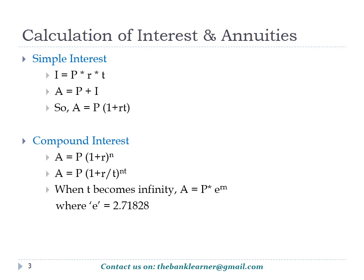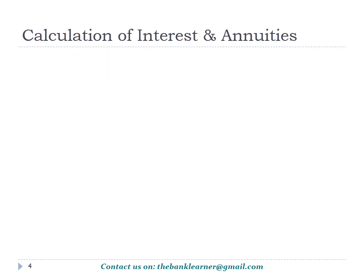Also, if the interest is compounded continually, A = P × e^(R×n), where e equals 2.71828.